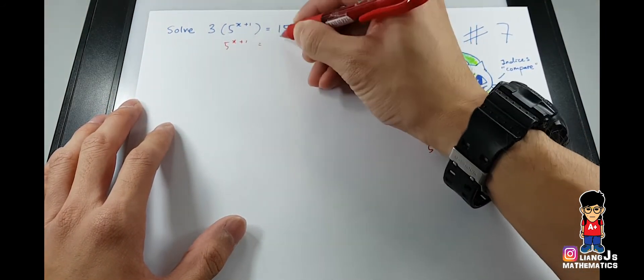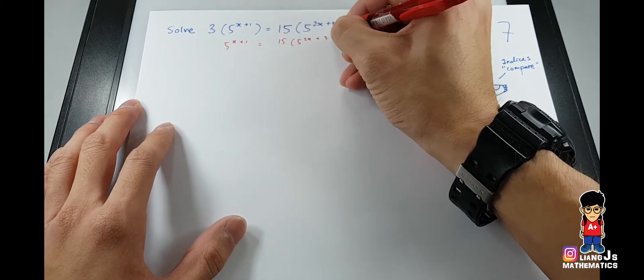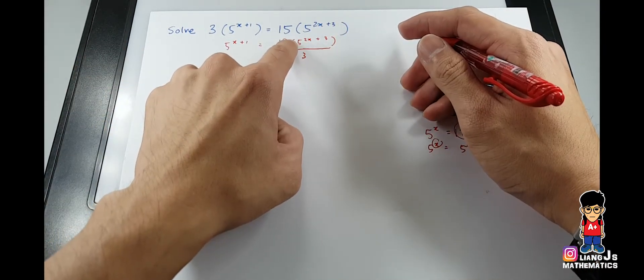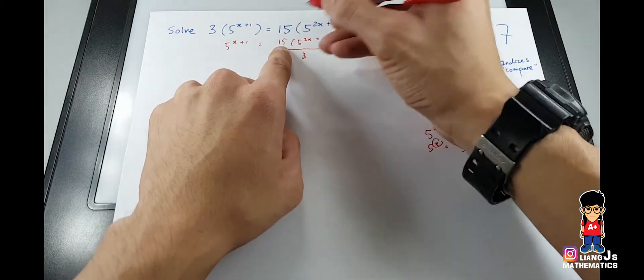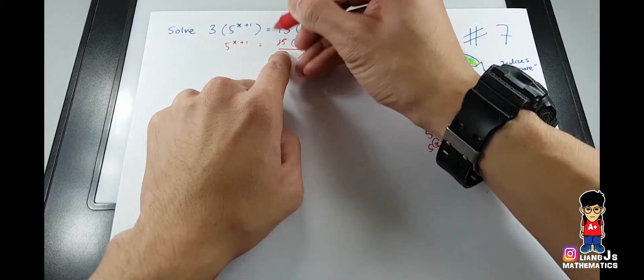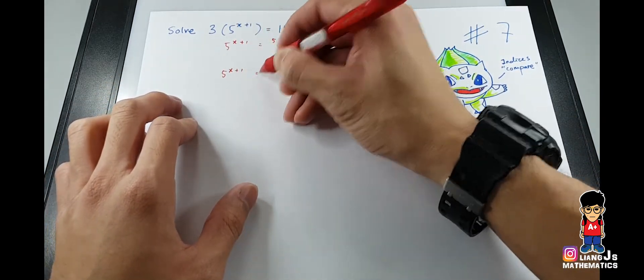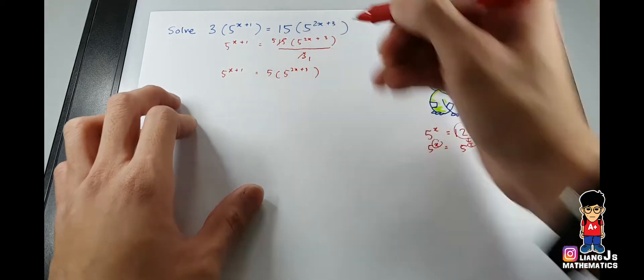Okay, this one. Then after that over you have a three here so don't divide the bracket inside because the index is different, you cannot divide. So I will go for 15 which is times relationship, so I just simplify it, I get a five right. So I get 5^(x+1) equals to five and after that 5^(2x+3) close bracket.